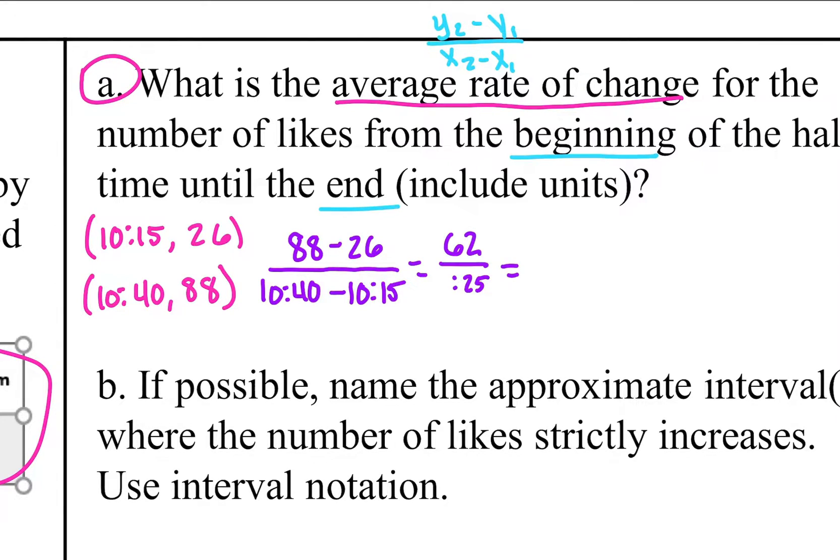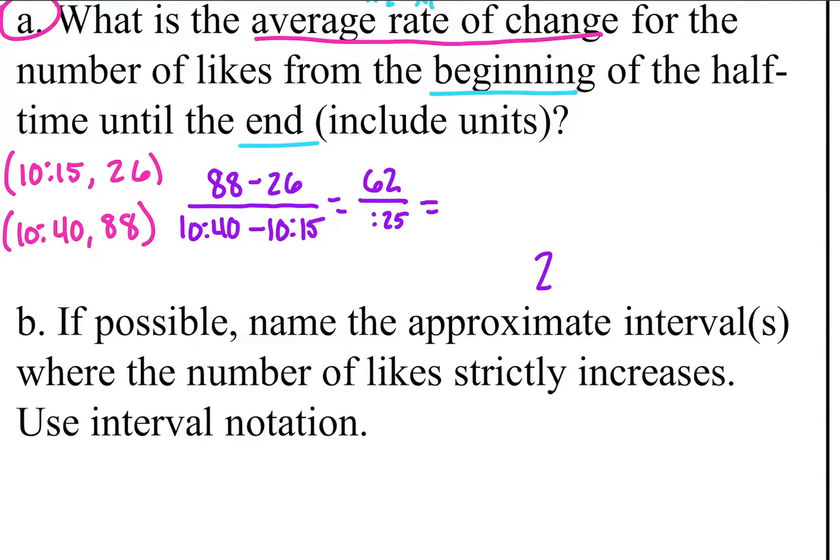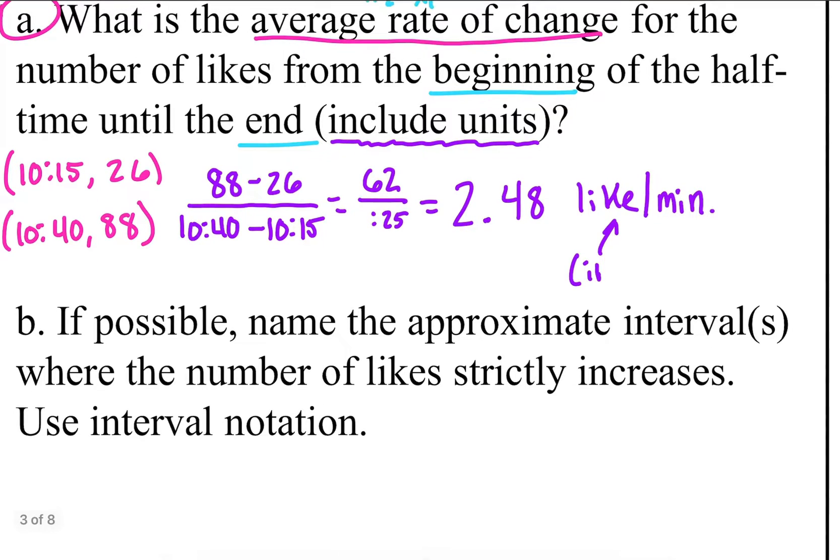So on the top 88 minus 26 is going to give us 62. And on that bottom, 10:40 minus 10:15, a better way to think about that is how many minutes have passed between 10:15 to 10:40. I know that's going to be 25 minutes. So in 25 minutes, there was an average rate of change of 62 million likes. So I'm going to take 62 and divide it by 25 on my calculator. When I do that, I get 2.48. Now they did say to include the units in the problem. Remember what this represents is likes per minute. So there's 2.48 million likes per minute was what was happening.